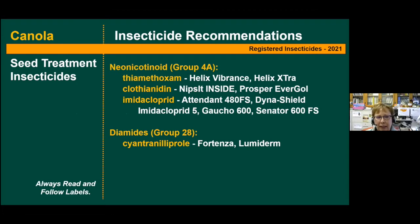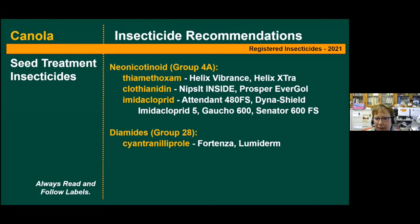We rely heavily on insecticide seed treatments for management of flea beetles. Our main group has always been the neonicotinoid insecticides, group 4A. We have three different modes of action commonly used for almost 20 years now. The diamides — group 28 — is a little bit newer. The active ingredient is cyantraniliprole, which you've probably heard referred to as Lumiderm. Oftentimes they combine cyantraniliprole with thiamethoxam or another neonicotinoid when it's commercially applied.